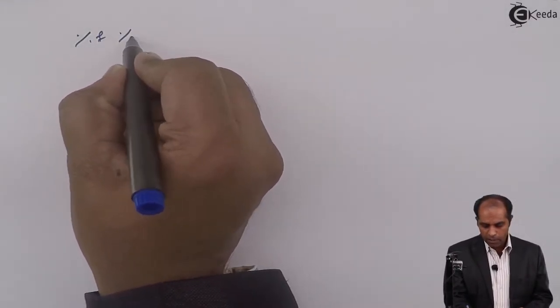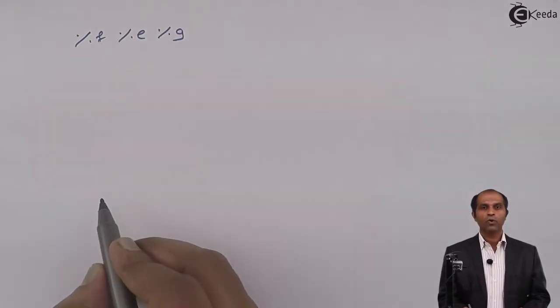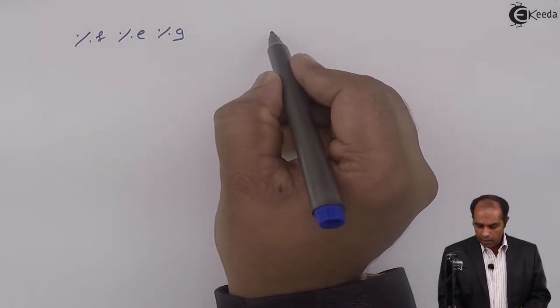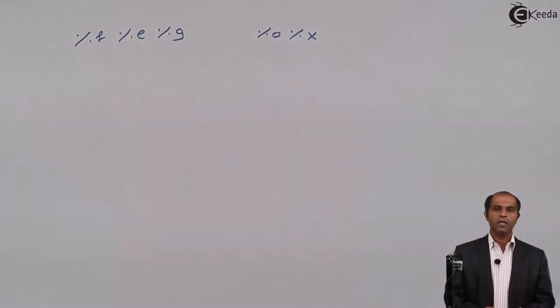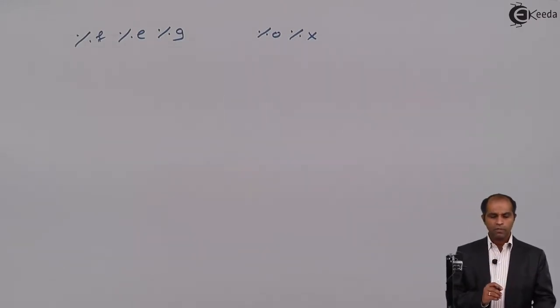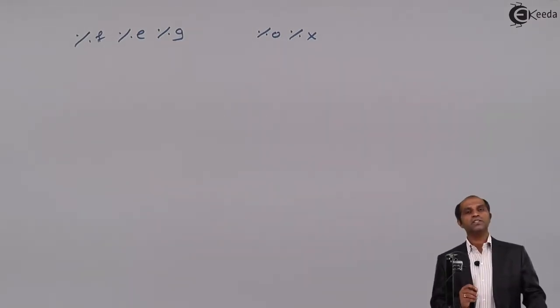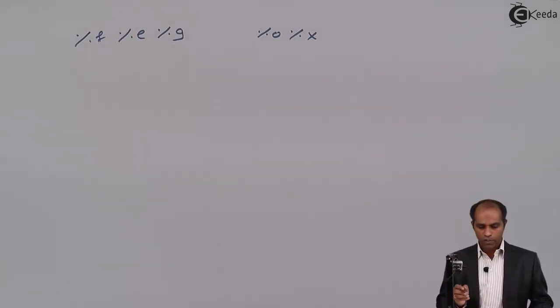Hello friends. Let us deal with the specific format specifiers like %f, %e, and %g with float values, and %o and %x with decimal values. Let's take up an example to illustrate the difference between these specifiers and how they will display a value on the output screen.